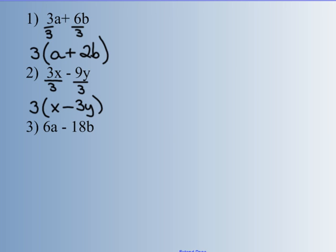Number 3 — 6a minus 18b. I could see they have a 3 in common again, but greater than 3, they both have a 6 in common. So I'm going to factor out a 6. 6a divided by 6 gives me 1a, and negative 18 divided by 6 gives me negative 3b. Put parentheses around that and put your common factor out in front. So 6a minus 18b in factored form is 6 times the quantity a minus 3b.